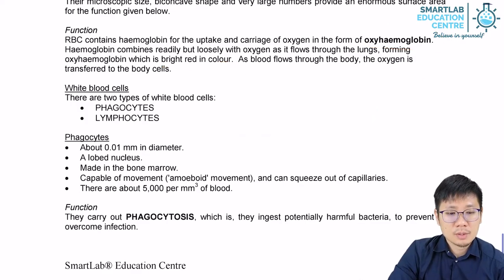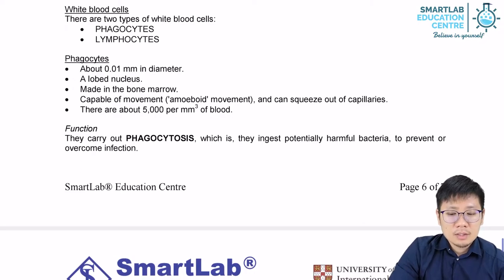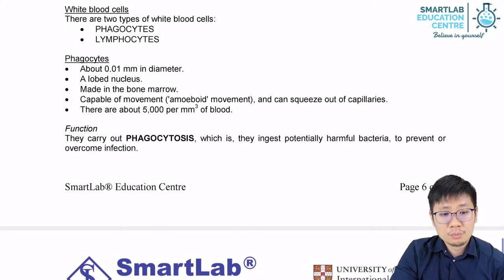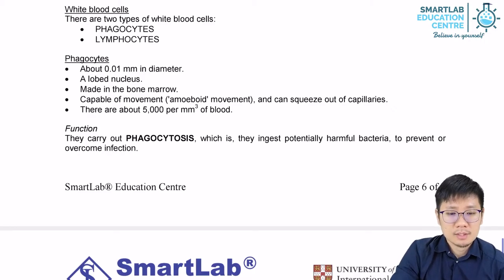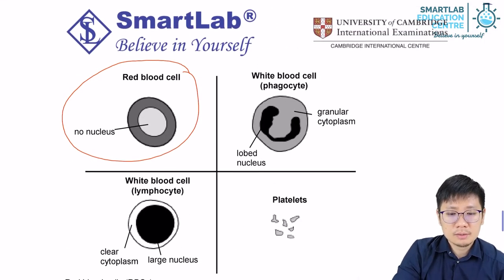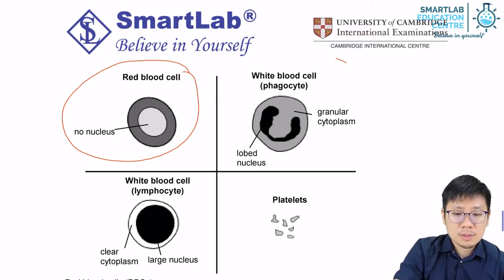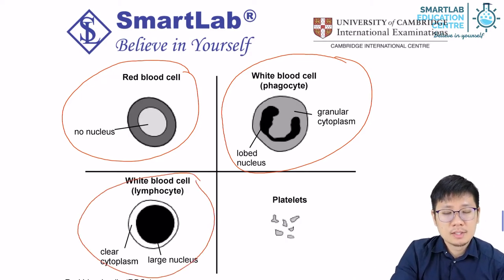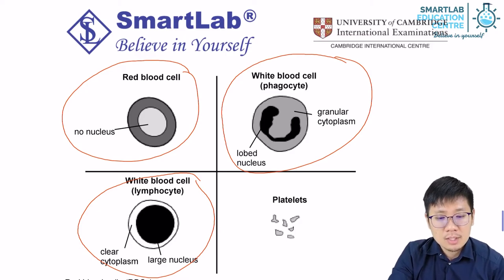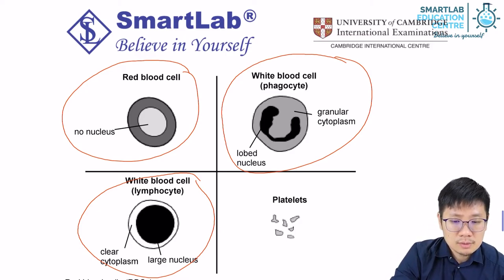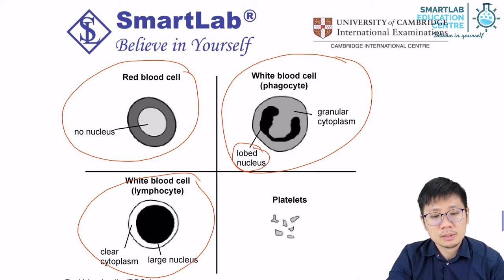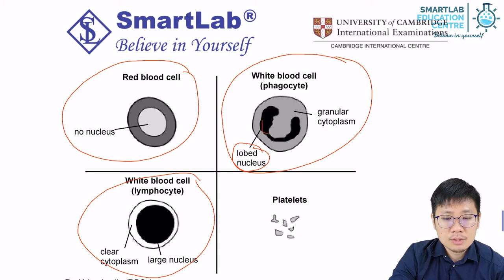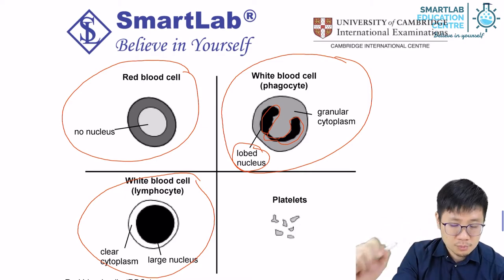Now let's talk about white blood cells. There are two main types: phagocytes and lymphocytes. You can see that they look quite different in diagrams. Most notably, pay attention to the nucleus — phagocytes have what we call a lobed nucleus, which is strangely shaped, as though there are two parts to it, called lobes, just like your ear lobes. The lymphocyte, on the other hand, has a very large nucleus that occupies almost the entire space in the white blood cell.